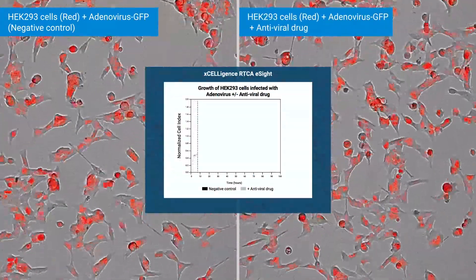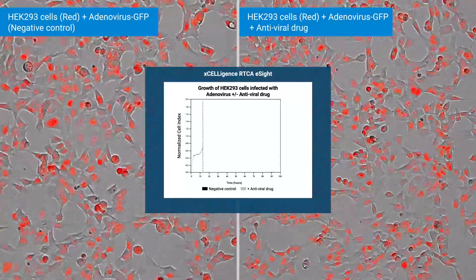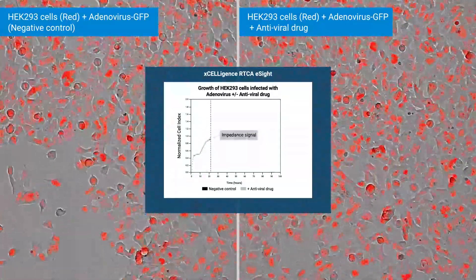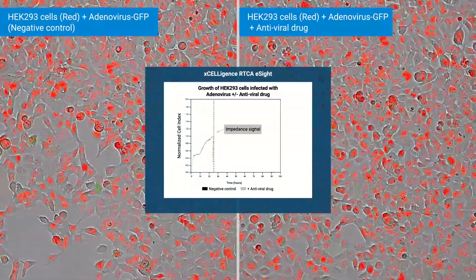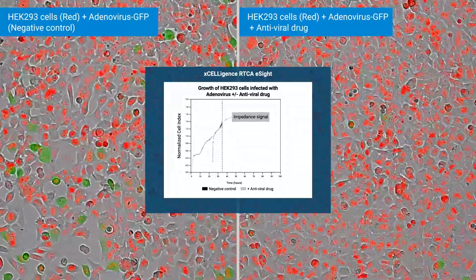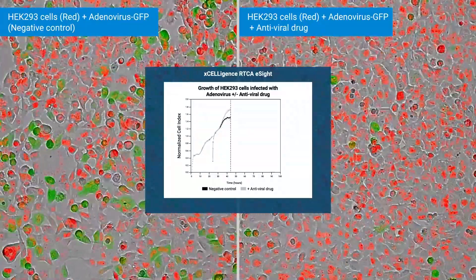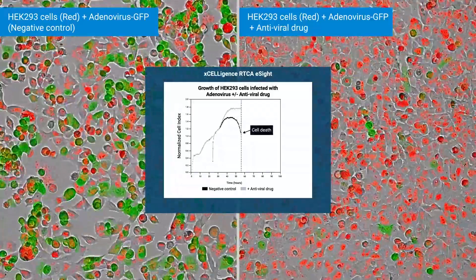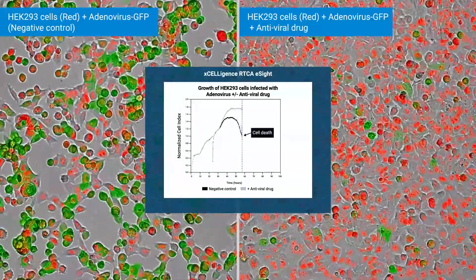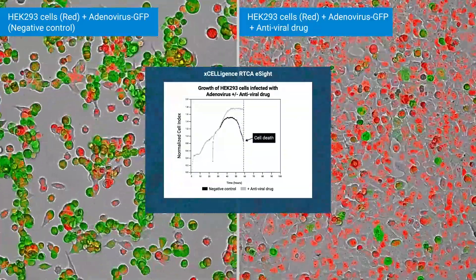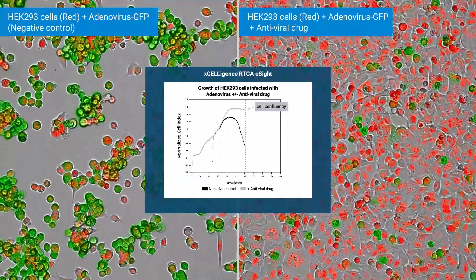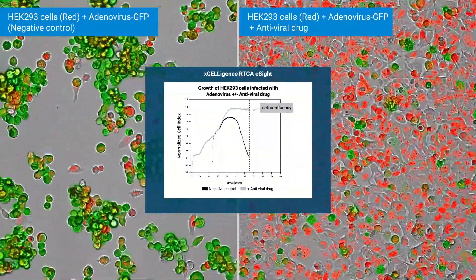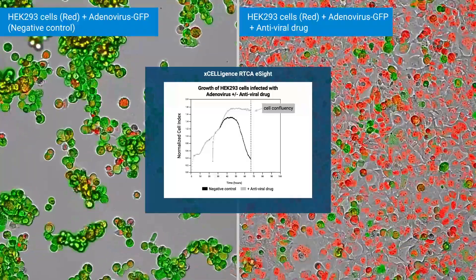Cell health and behavior are monitored using impedance and live cell imaging simultaneously. Impedance signal increases as cells proliferate. In the control, cell death is observed after the addition of the adenovirus, represented by a decrease in the impedance signal. In the presence of the antiviral drug, the impedance signal plateaus as cells reach confluency.